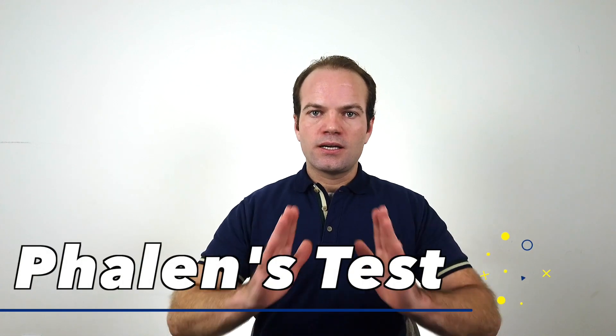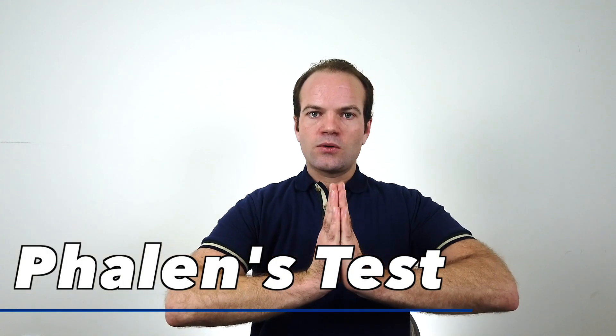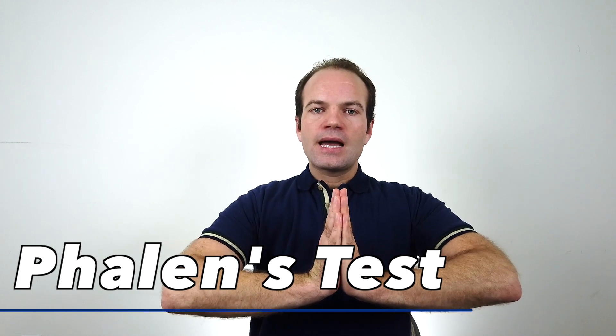If you want further evidence of carpal tunnel syndrome, you can move on to the second test, which is called the Phalen's test. To do that, you place the hands together, like this, into what's referred to as the prayer stretch, and hold for 30 to 60 seconds. Again, if this recreates your familiar pain, numbness, or tingling, that's a positive Phalen's test, providing further evidence of carpal tunnel syndrome.